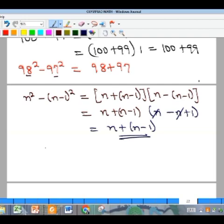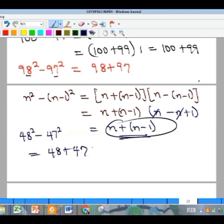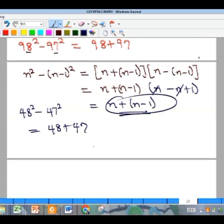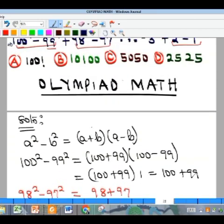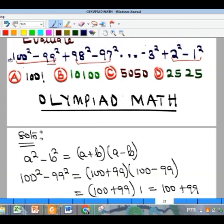The implication is that if I have the difference of two squares where the first number is one greater than the other number, just know that it is the same thing as this. Whatever you are given, let's say 48² - 47², this is simply the same thing as 48 + 47. It's a generalization that we have achieved here.